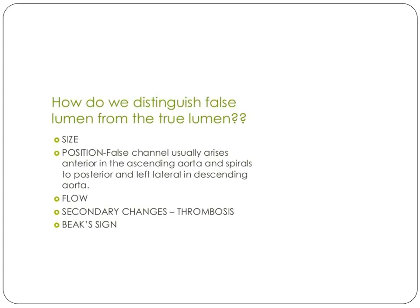How can we differentiate between the false lumen and the true lumen? First, by size — the true lumen is smaller than the false one because the false one contains blood or atheroma. By position, the false canal usually arrays anterior in the ascending aorta and spirals to posterior and left lateral in the descending aorta. By flow, the flow in the true lumen is greater than that of the false one.